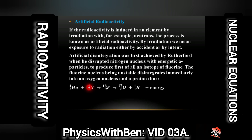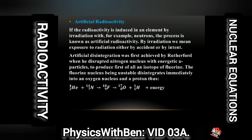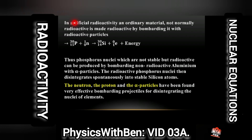The nitrogen was bombarded with alpha particles and a proton was formed plus energy. Isotopes are atoms of the same atomic number but different mass number. In artificial radioactivity, an ordinary material not normally radioactive is made radioactive by bombarding it with radioactive particles, as you can see here.